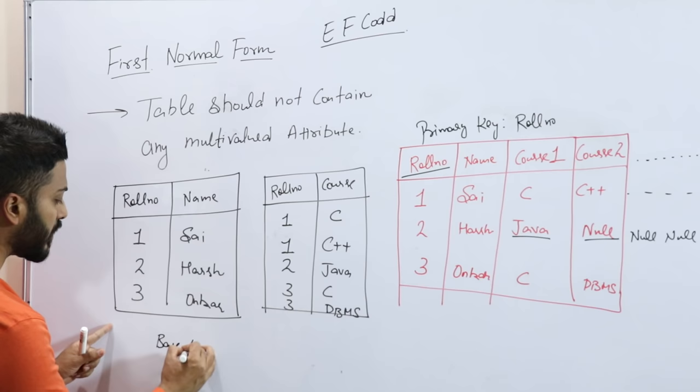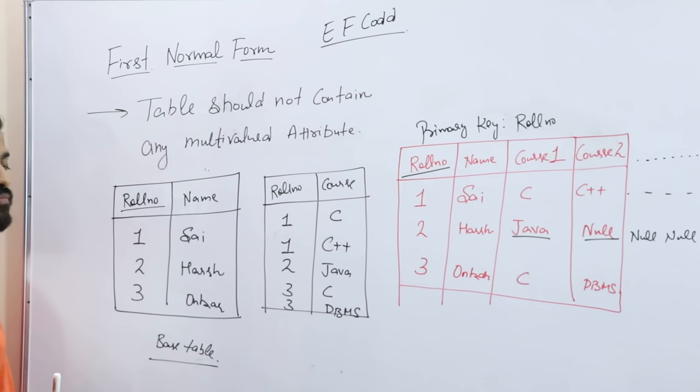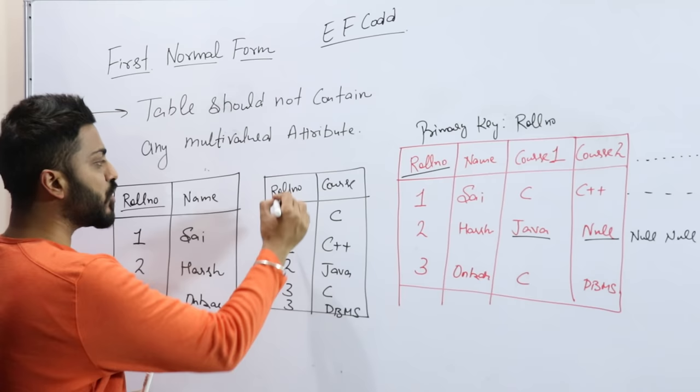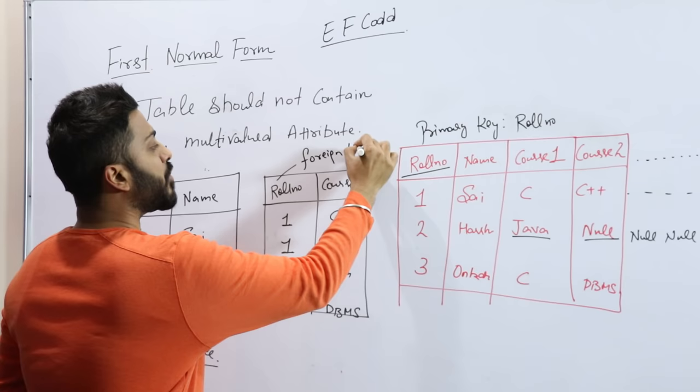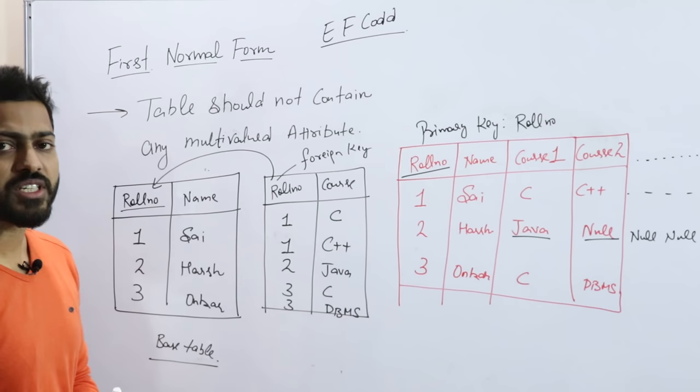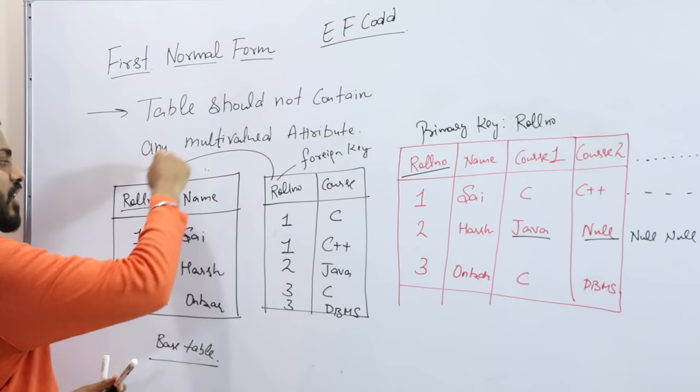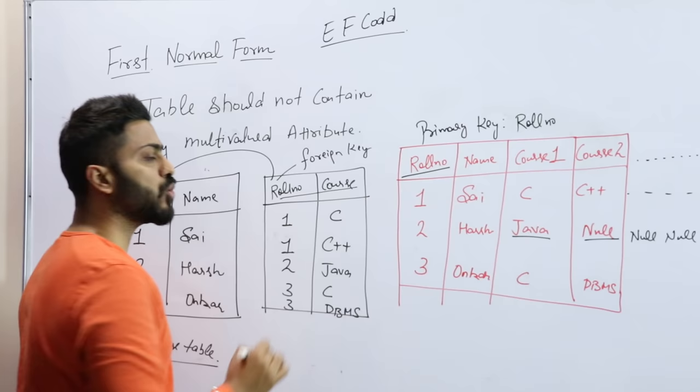So here we are calling it a base table because its primary key exists, that is roll number. So roll number is the primary key. Here we are referencing table because this roll number is a foreign key, as we already know. Foreign key references the primary key. Primary key - this will take the reference from this.